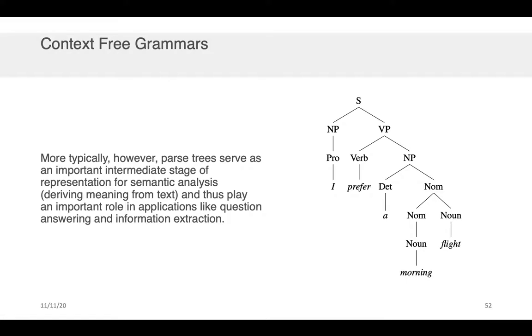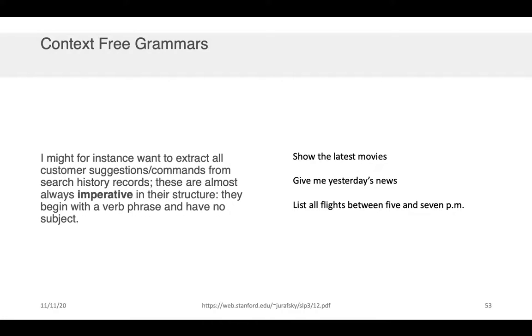But that's just in the context of grammar checking. More typically these parse trees serve as an important intermediary step of representation for semantic analysis, so that's how you derive meaning from a text, and so anything from question answering systems to information extraction, parsing your text so that you can extract information about the likely subject candidates and the links between the subject and the object is usually critical.